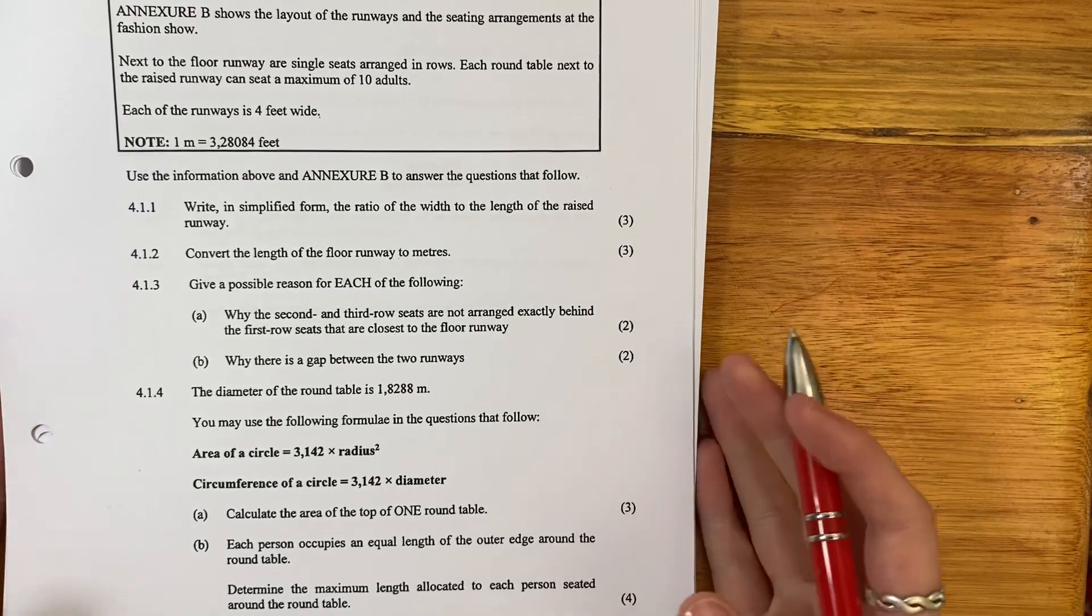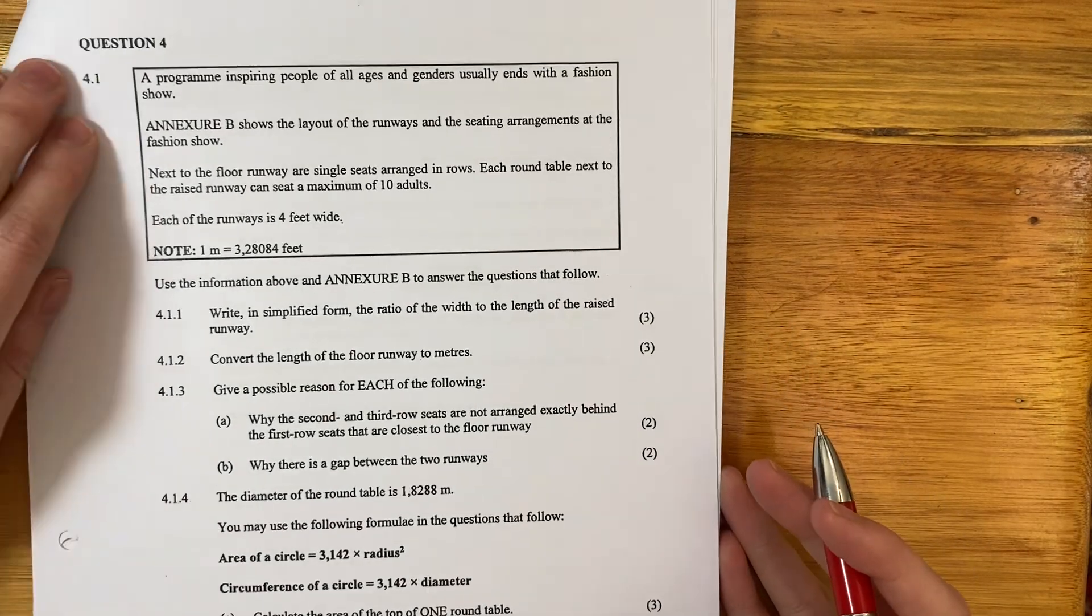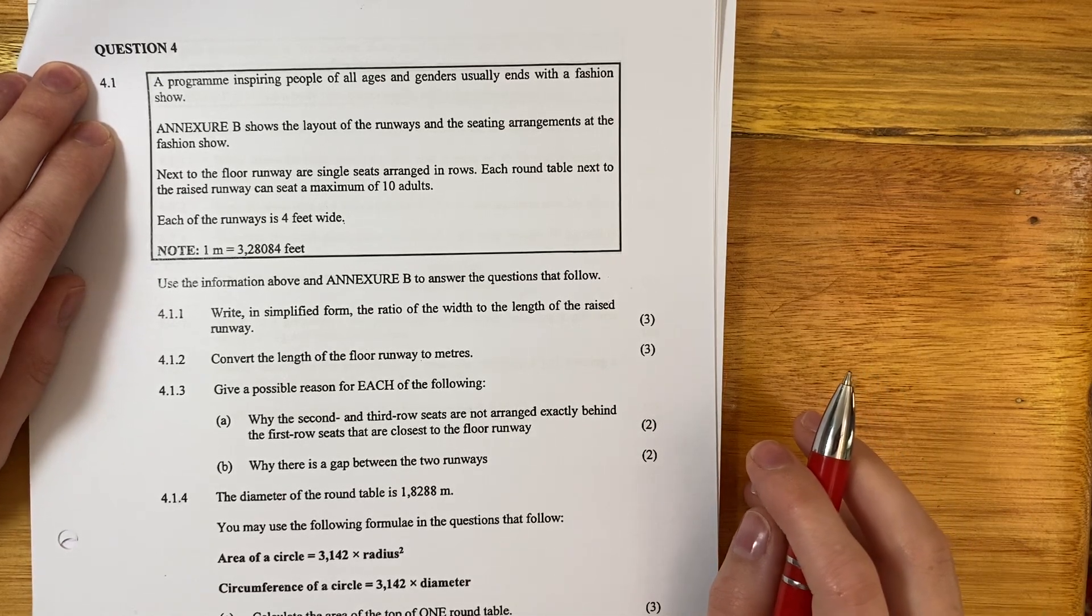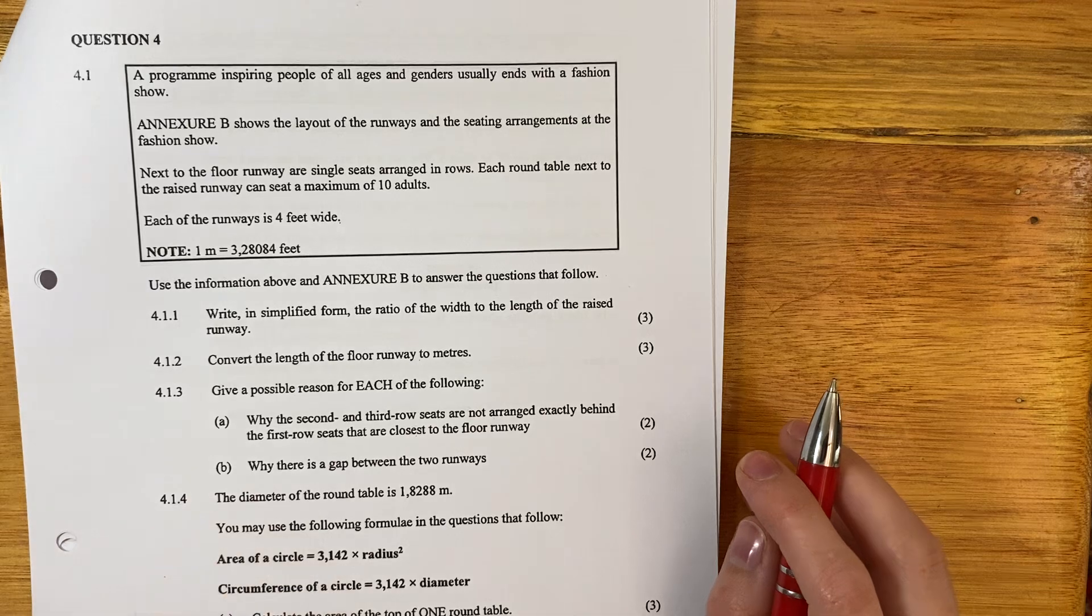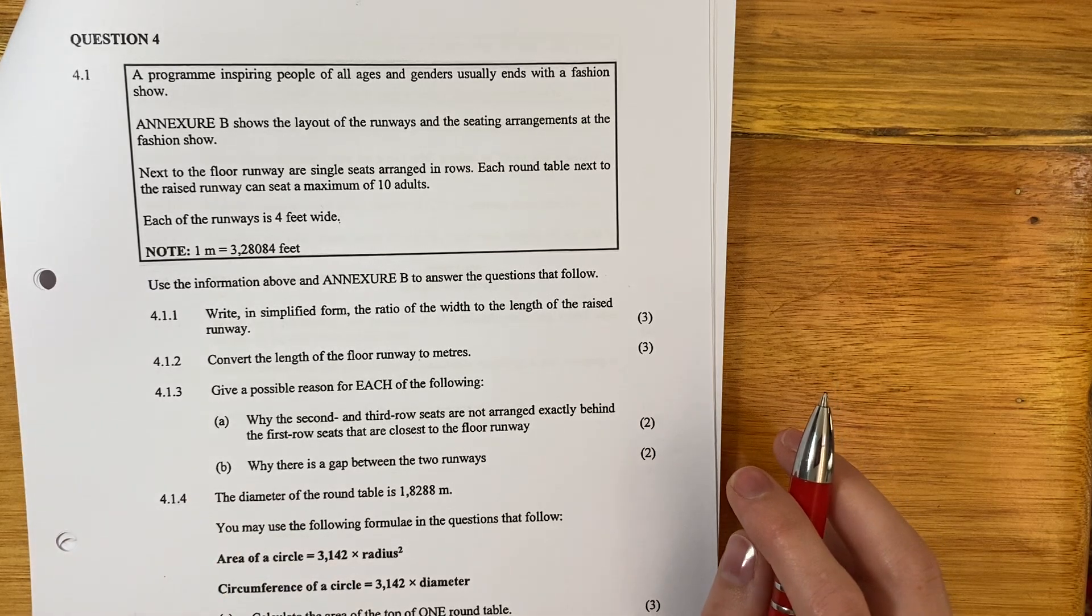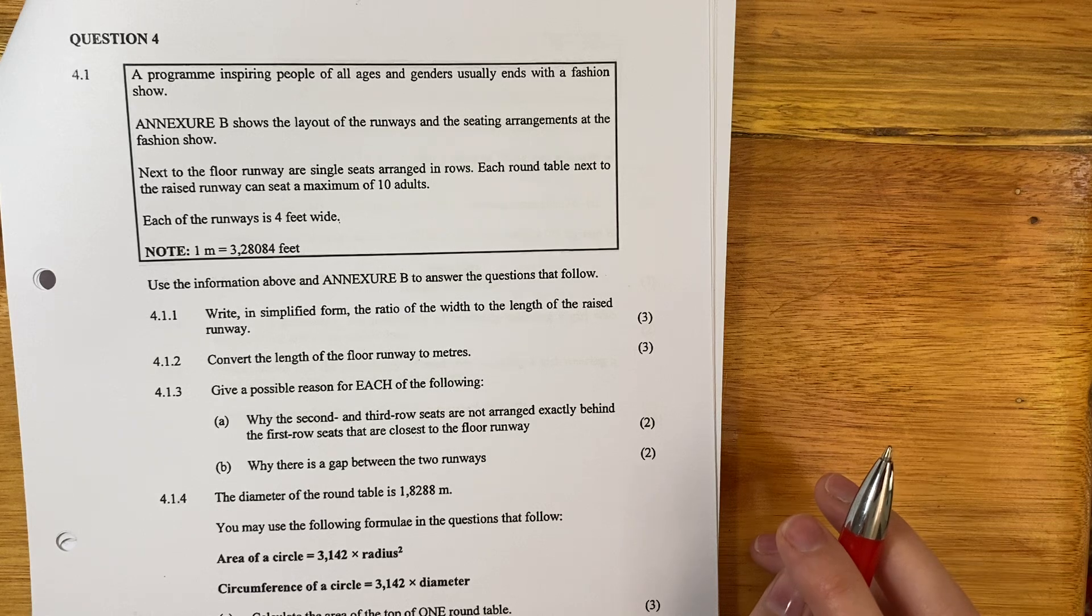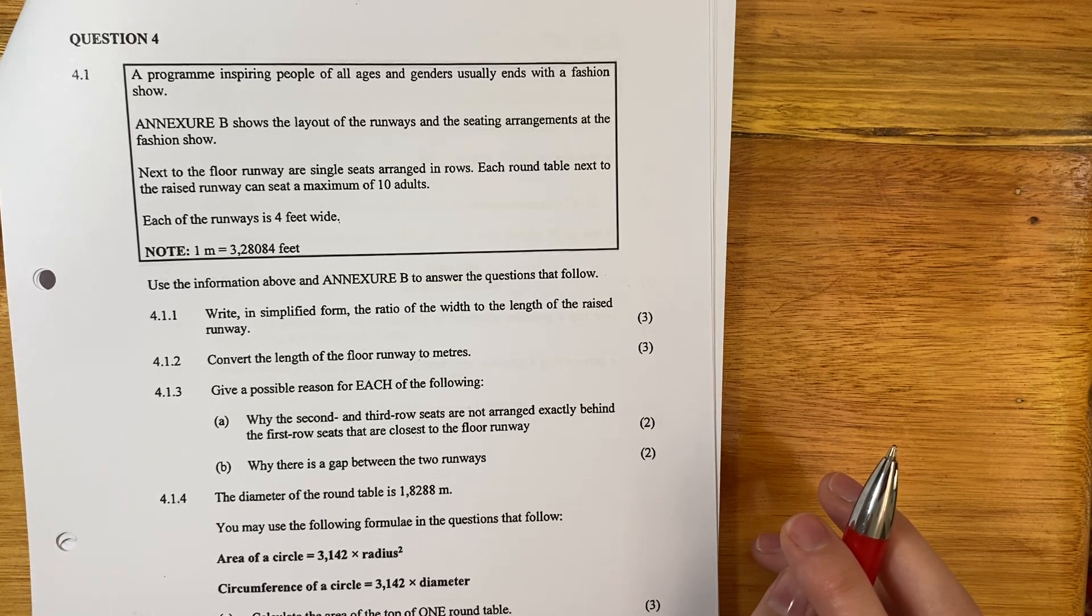All right, let's look at question four. A program inspiring people of all ages and genders usually ends with a fashion show. Annexure B shows the layout of the runways and the seating arrangements at the fashion show.